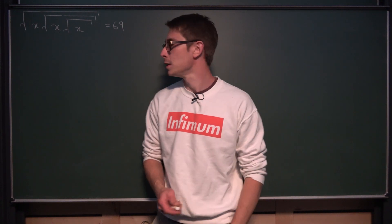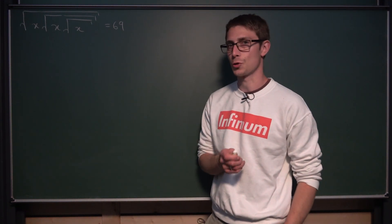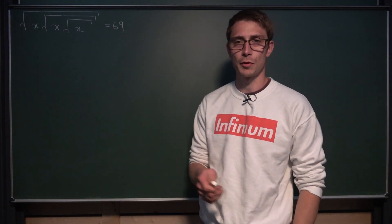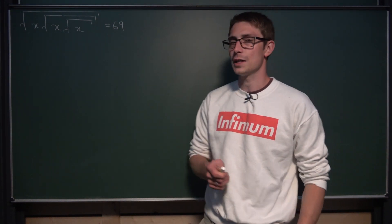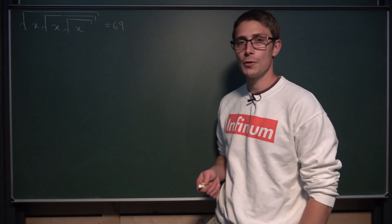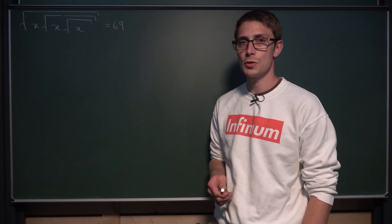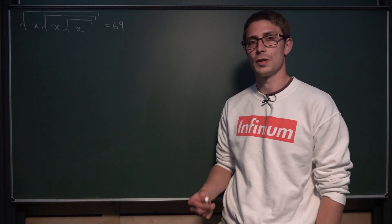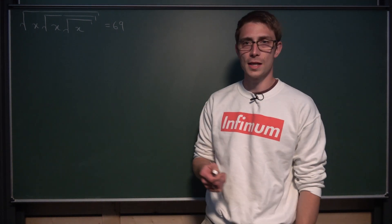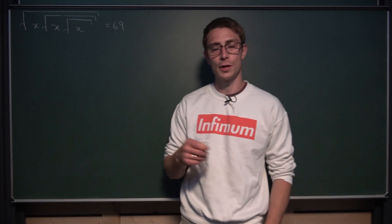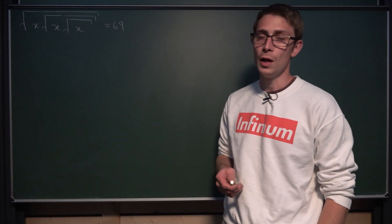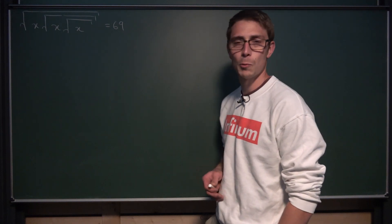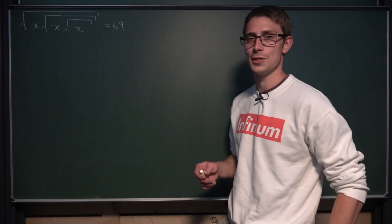Gentlemen, it's time. Today we are going to answer the HR question: when is the square root of x of the square root of x of the square root of x equal to 69? Try it out and keep watching the video for the solution. Also, write your answer down in the comments, and this question will lead us down a nice little mathematical rabbit hole.